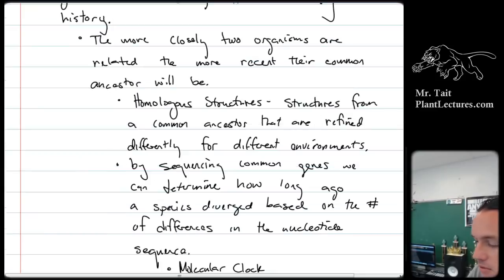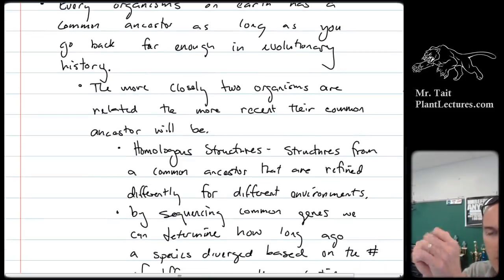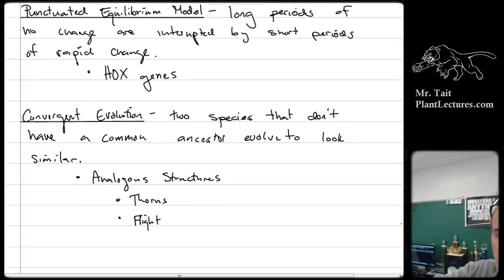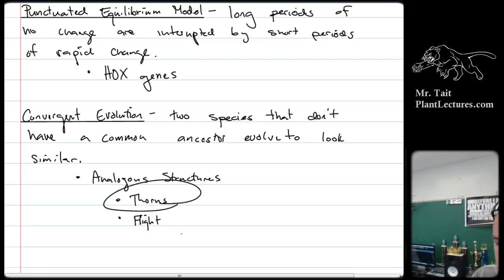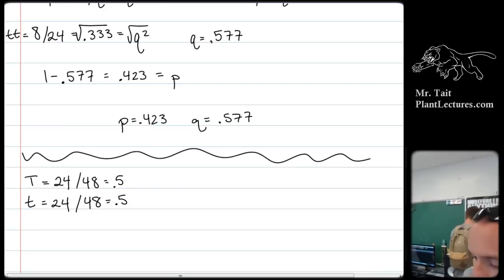There are two different types of evolution: divergent evolution and convergent evolution. Divergent evolution is where you have a common ancestor and structures evolve in two different ways — that leads to homologous structures. Convergent evolution is where two organisms not from a common ancestor converge on a common trait. We said that thorns and flight have evolved many times. That's why the wings of a bird are analogous to the wings of a butterfly, because they both evolved flight at different times, not from common ancestry.